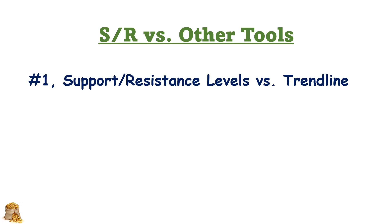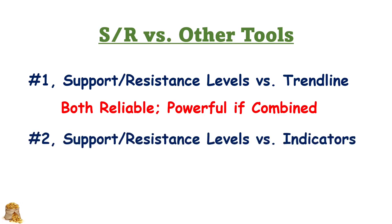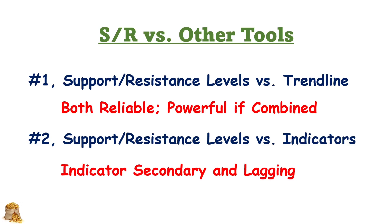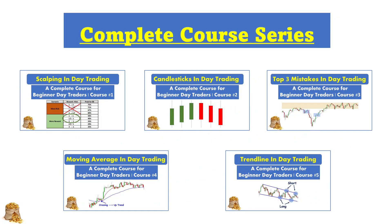Support and resistance levels are very important in day trading, but we also have other tools. The first one is the trend line — both support and resistance levels and the trend line are very reliable, and if we combine them together they will be very powerful. We also have other indicators, but most indicators are secondary and lagging, which means they don't have much forecasting power. However, they can work as confirmation, especially when support and resistance levels and trend lines do not work well or do not appear on the chart. In this complete course series, I have a video on the trend line and also a video on the moving average you can reference.